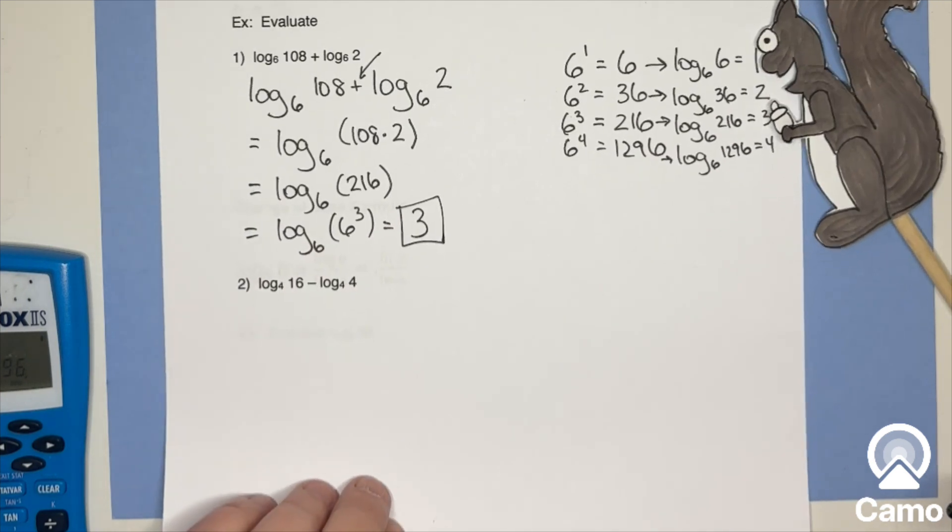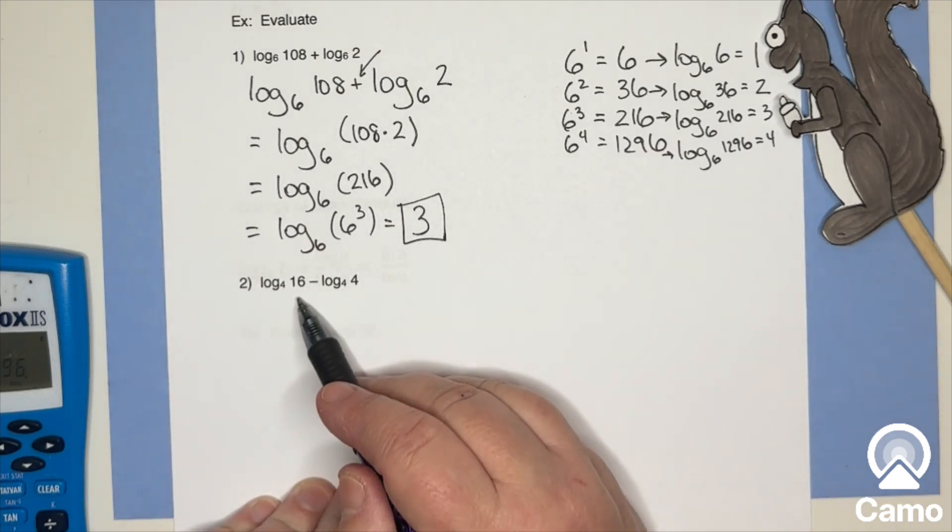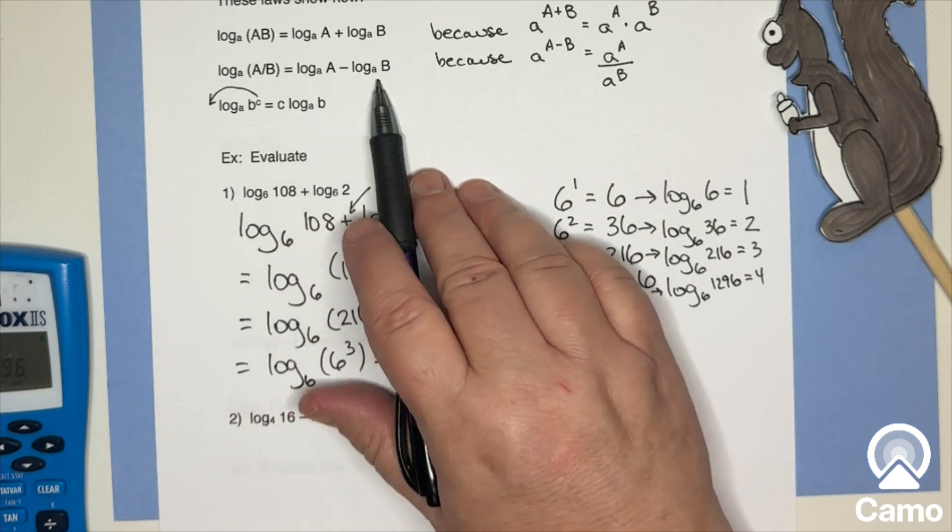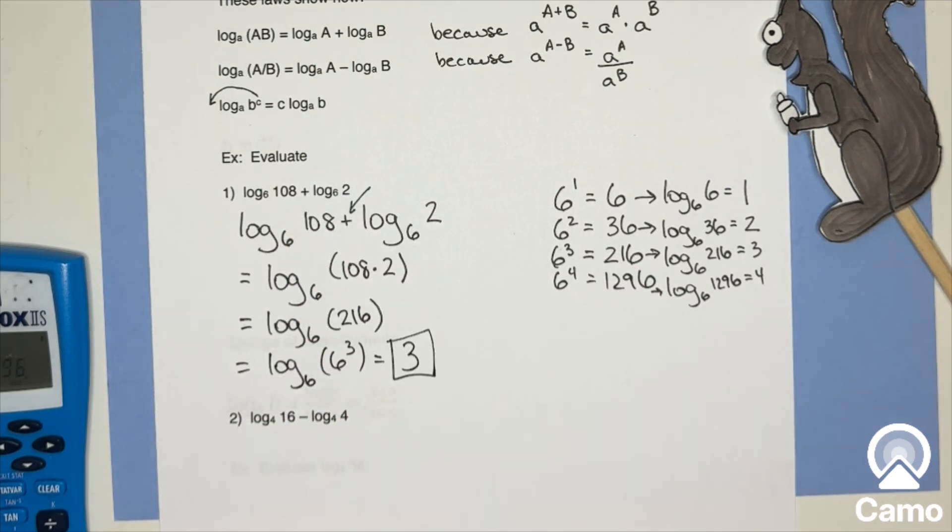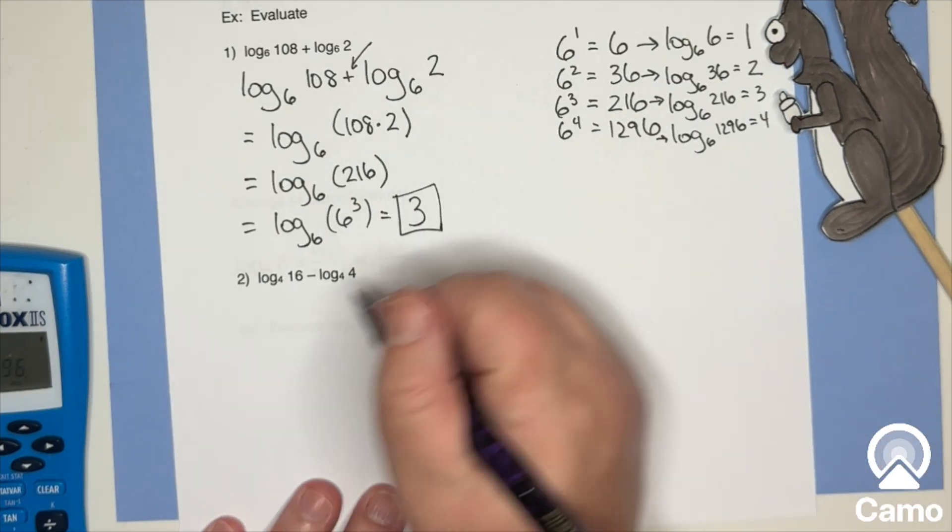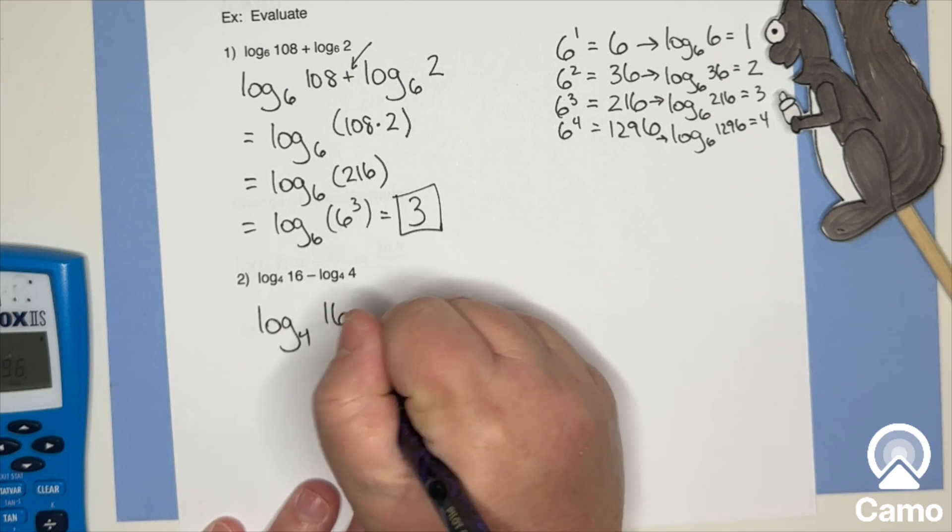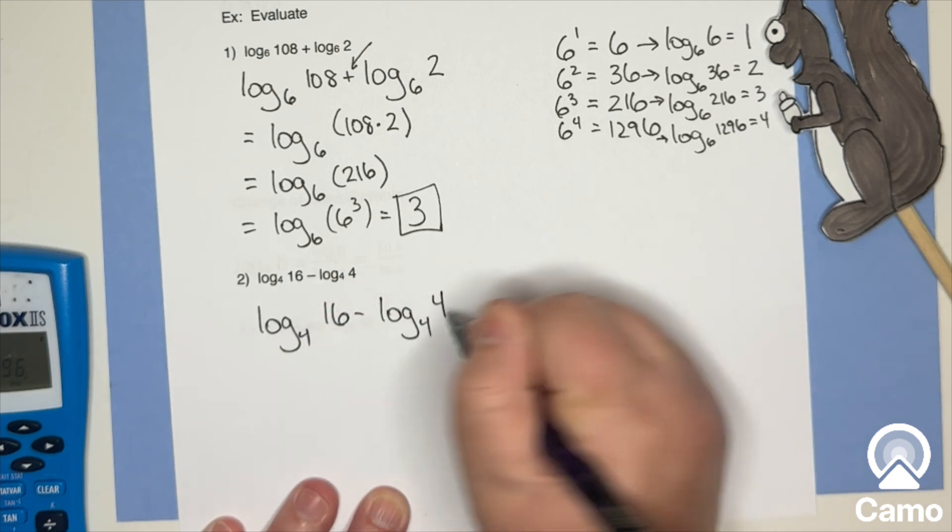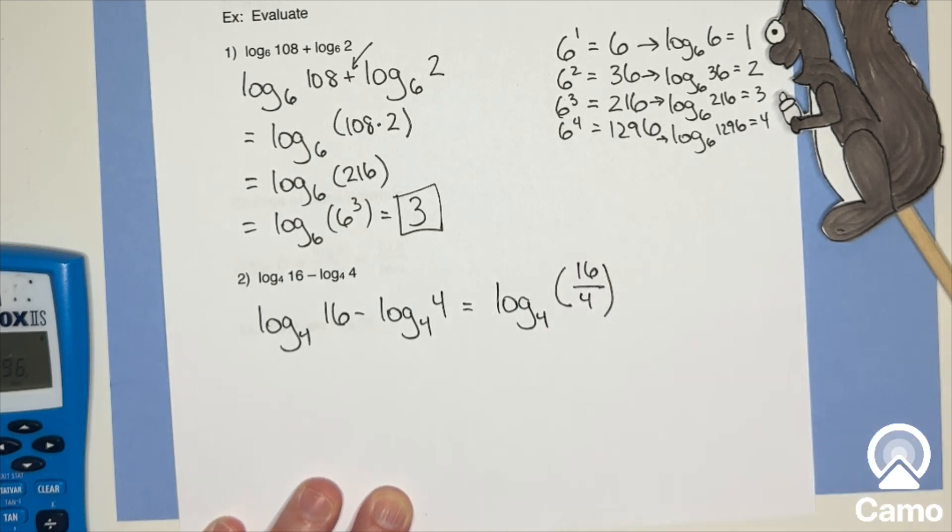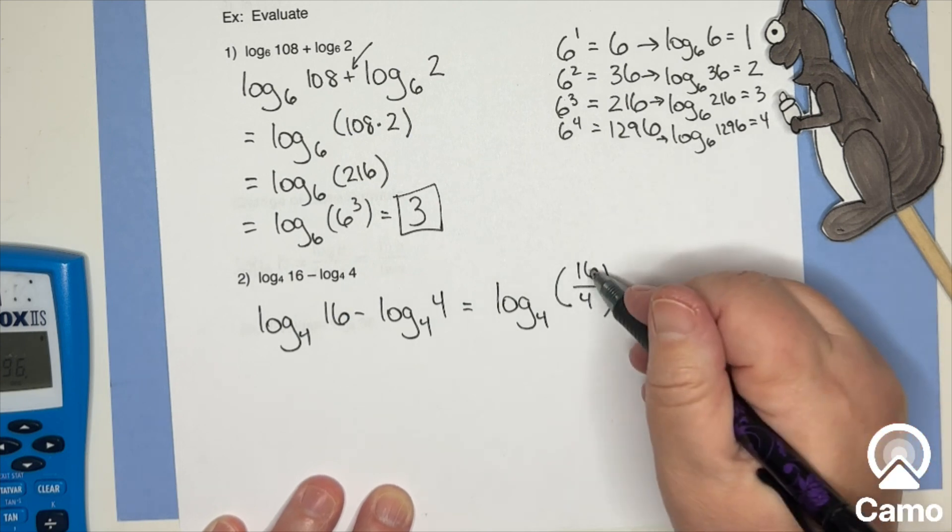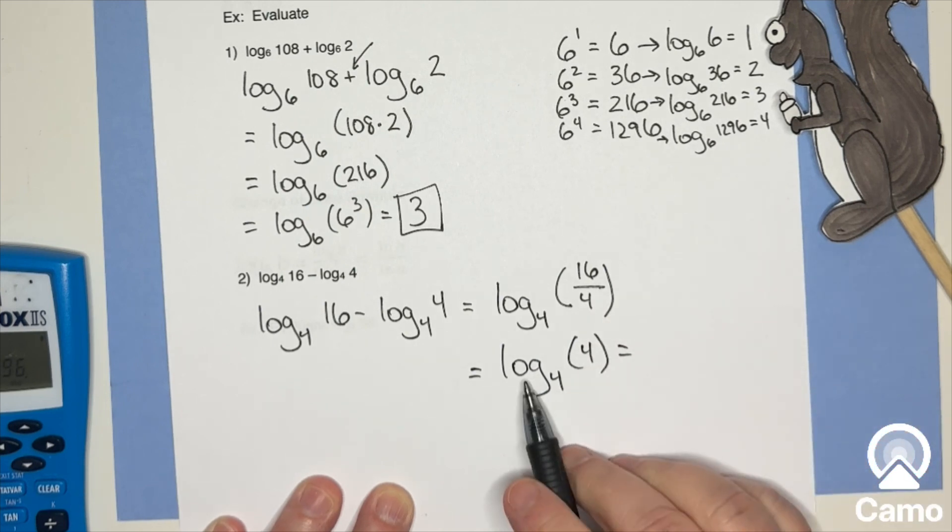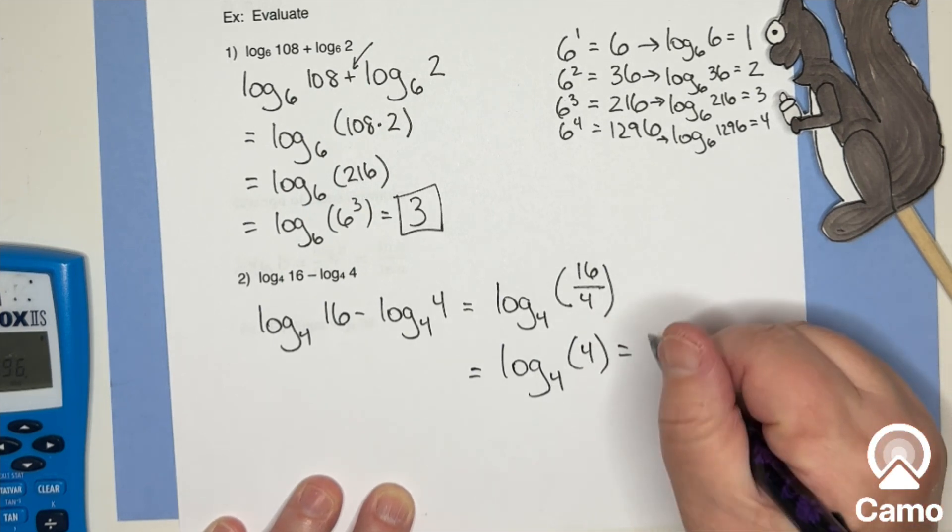So let's take a look at this one. Now this one says I've got log base four of 16 minus log base four of four. And back up here, we've got, if I've got same base, and I'm subtracting two logarithms, I'm really taking the ratio. So let's look at this. Log base four of 16 minus log base four of four is log base four of 16 over four.